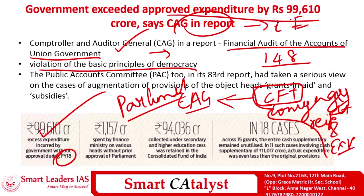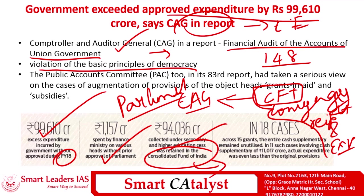Apart from the excess expenditure, about ₹1,100 crores was spent by the Finance Ministry on various heads without parliamentary approval. Majority — about ₹95,000 crores collected under the Secondary and Higher Education Cess — was retained under the Consolidated Fund of India without being properly utilized for the purpose for which the cess was collected, and in many cases grants given were also unutilized. This CAG report is supplemented by the Public Accounts Committee's 83rd report, which takes up serious cases of argumentation of provision under grants-in-aid and subsidies.